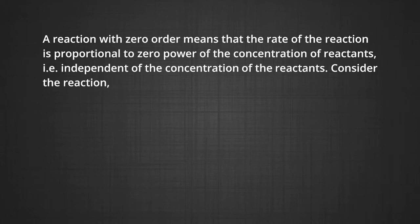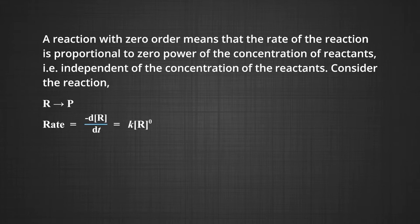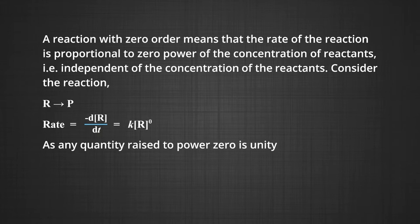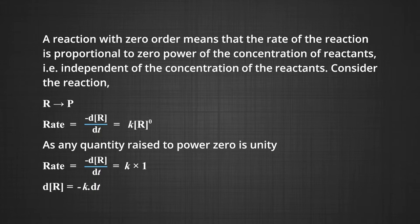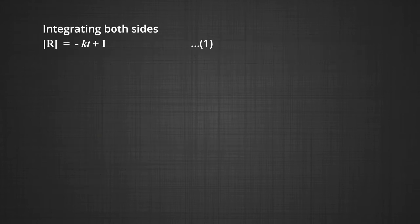For zero order reactions: a reaction with zero order means that the rate of the reaction is proportional to the zero power of the concentration of the reactants — that is, independent of the concentration. Consider the reaction R → P. The rate expression is: −d[R]/dt = K[R]⁰. Since any quantity raised to power zero is unity, the rate equals K. Therefore, d[R] = −K·dt. Integrating both sides: [R] = −Kt + I, where I is the constant of integration.